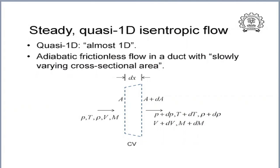With this background, we will move on and talk about one of the most important parts of introduction to compressible flow: steady quasi one-dimensional isentropic flow. Quasi-1D is supposed to mean almost 1D, which conveys the idea that we are talking about a flow inside a duct whose cross-sectional area is varying very slowly as you move along the flow direction.